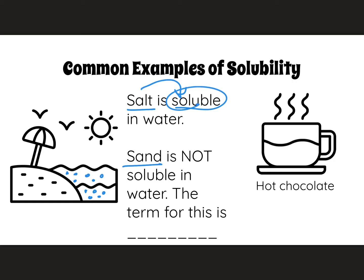On the other hand, sand is not soluble in water. If it were, there would be no beaches, right? Because as soon as the water from the ocean or the lake washed up on the shore, the sand would dissolve and there wouldn't be any beach left. And then where would we go on vacation? So in this case, sand is not soluble in water. The term that we use for this is insoluble. So sand is insoluble in water.